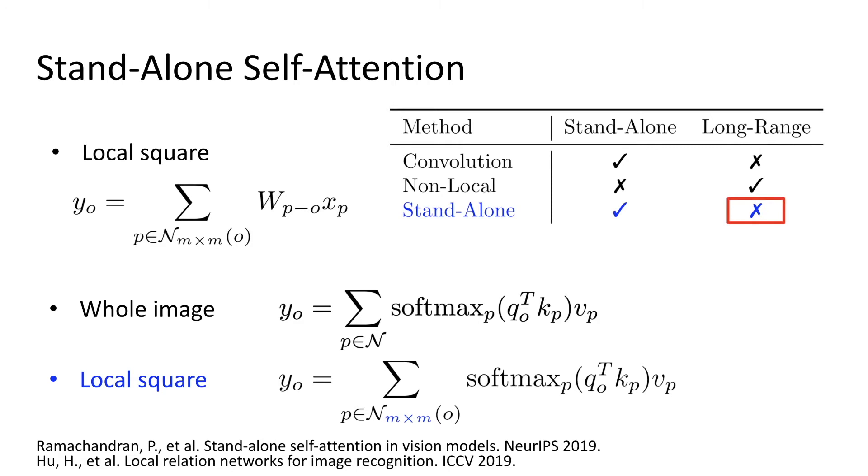More recently, standalone self-attention has been proposed. It constrains the receptive field of self-attention to a local square region around o, similar to convolution. This makes self-attention efficient on large feature maps, and thus enables it to be used as a standalone building block. However, the local constraint makes it challenging again to model long-range relations.